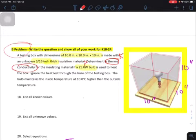We're going to use this to get the area and this is the thickness. It is used to heat the box. Ignore the heat loss through the base of the testing box. The bulb maintains the inside temperature at 10 degrees Celsius higher than the outside temperature. That's going to be our temperature difference, 10 degrees higher inside than outside. And we are not going to be considering the bottom of the box.